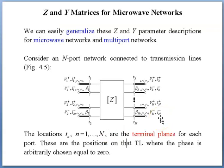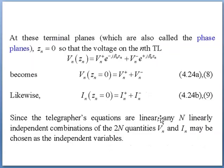Z and Y matrices for microwave networks. We can easily generalize this Z and Y parameter description for microwave networks and multiport networks. At these terminal planes, which are also called the phase planes, Zn would equal 0 so that the voltage on the nth transmission line would be Vn equals Vn+ exp(-jβnZn) plus Vn- exp(+jβnZn).